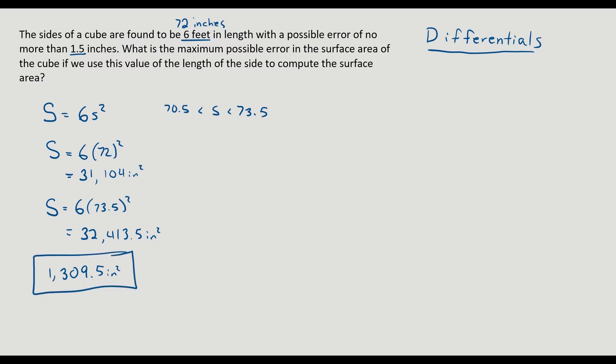All right. So that's the way to think through it non-calculously. You take the ideal surface area and then you find the maximum possible surface area given that the sides can be within 1.5 inches of 72. But let's think about calculus in this way. So let's take a side trip over here.